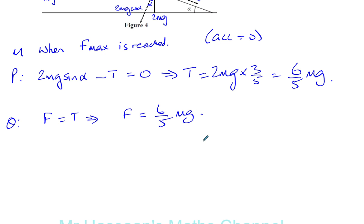And we know that F max has been reached because we're looking at the limiting, the maximum possible friction that could be reached. So it's reached that maximum point. So F max is equal to mu R.